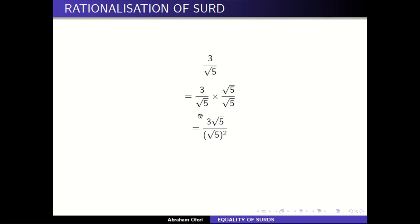So then you get three square root of five over square root of five all squared, meaning multiplying the same thing, and this will give me three square root of five over five. So very simple. In case you encounter this anywhere, that is how you do it.